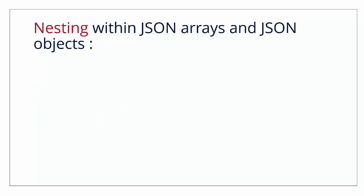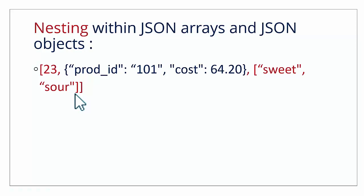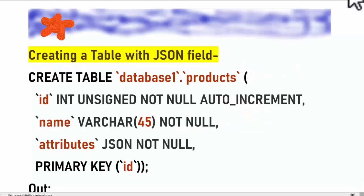Nesting within JSON arrays and JSON objects: you can nest a JSON object or another JSON array inside a JSON array. Here is a JSON array enclosed within square brackets, and inside it a JSON object is nested as an element. Another JSON array like 'sweet, sour' is also nested inside this JSON array. Similarly, for JSON objects, we can nest a JSON array or JSON object inside the main JSON object. A key can have multiple values and we can list them as a JSON array.